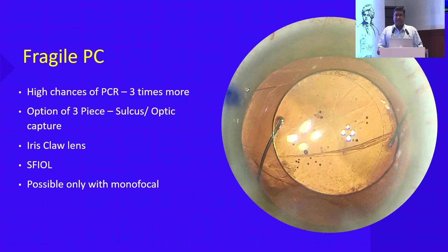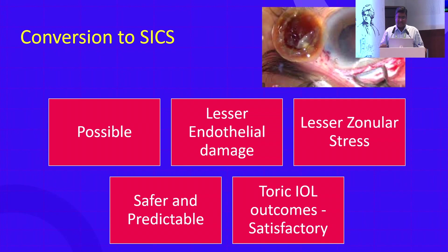Then, fragile PC. In these cases there are high chances of a PC rent, and in those cases a toric IOL will not be useful. You need to place a monofocal IOL because PCR chances are documented to be three times more in these cases. The option of three-piece IOL and sulcus placement is more suitable — monofocal IOLs, iris-claw, or SF IOL. And if at all you want to convert to SICS, there is a good option there as well.